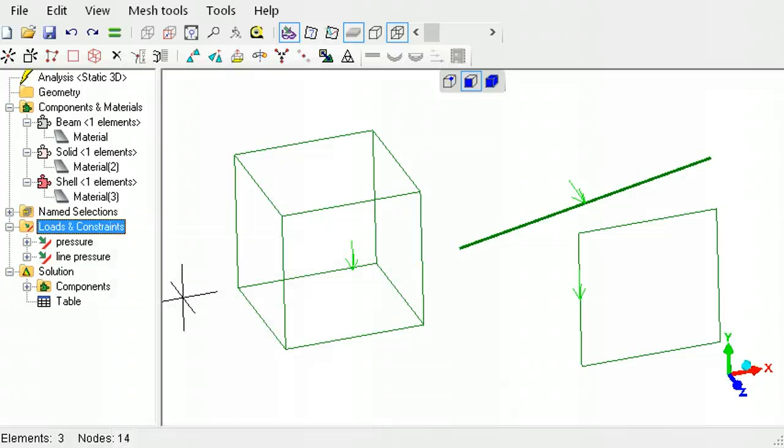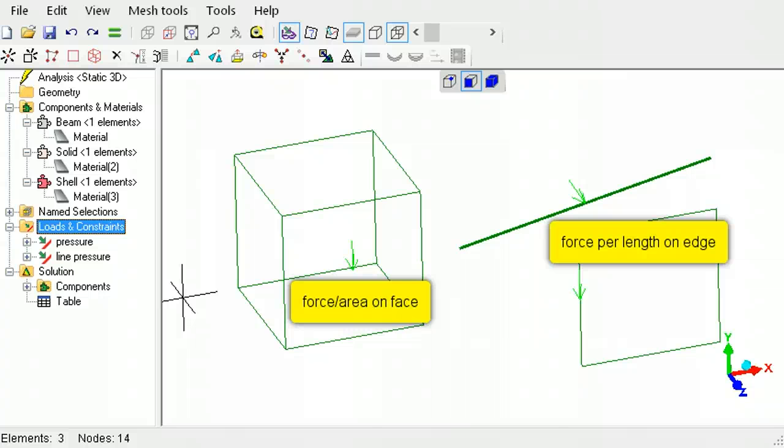This means that line pressure can only be applied to edges and not faces.